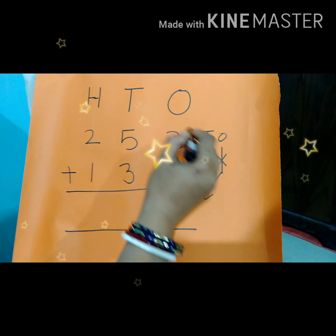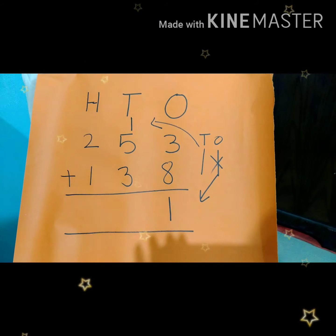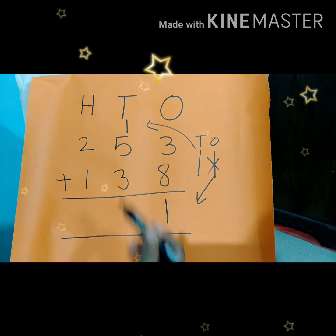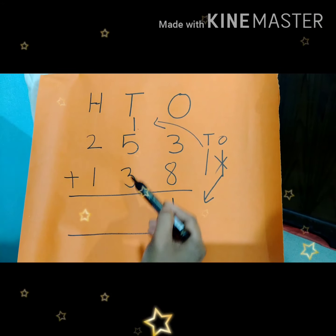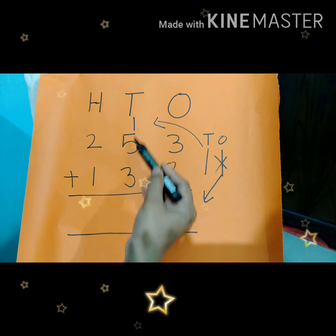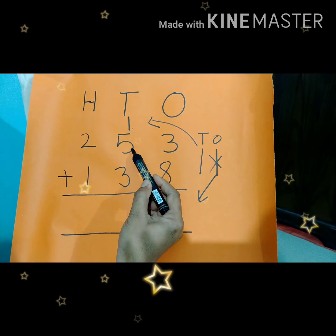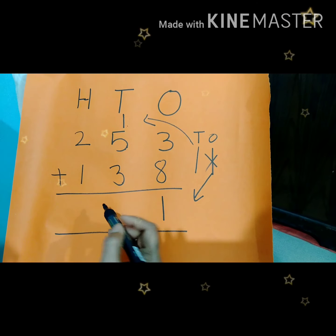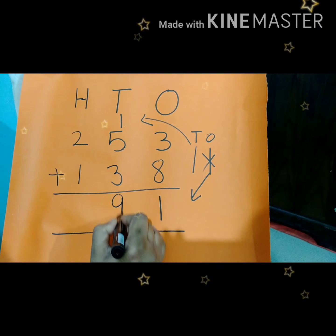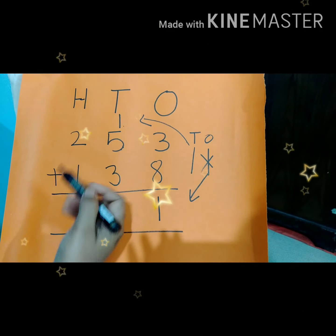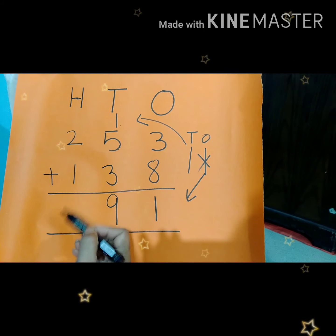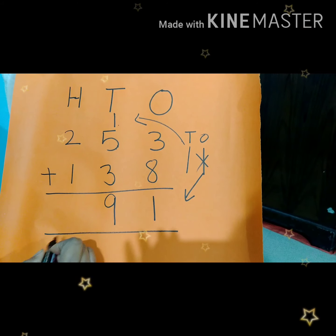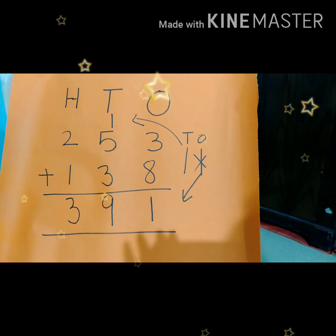So this 1 will go to 10's place over here — we can write it in 10's place as a carry. Now in 10's place we have numbers 1 plus 5 plus 3. So 1 plus 5 is equal to 6. 6 plus 3 is equal to 9. So we can write 9 here. In 100's place we have 2 plus 1. 2 plus 1 is equal to 3. So we can write this 3 here.